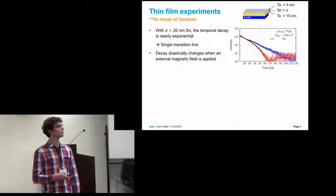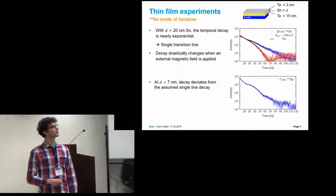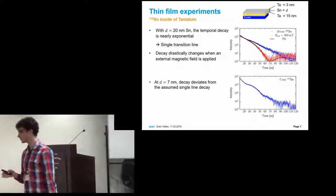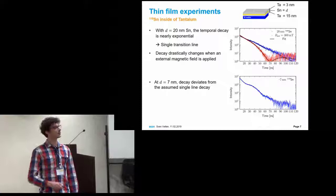We made a thinner one with 7 nanometers. We see that these features get enhanced. This is not a straight line anymore. There might be some line splitting. But because we know not a lot about the system, the fitting process is quite ambiguous.